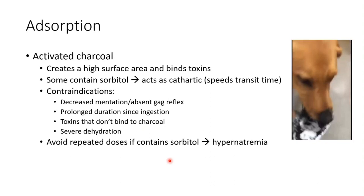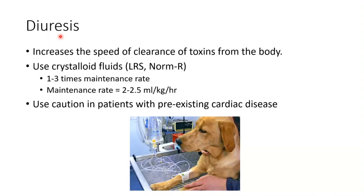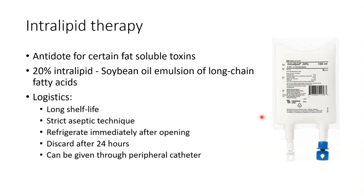Diuresis via IV fluid therapy helps flush out many toxins. I give anywhere from one to three times maintenance rate, with maintenance being defined as 2 to 2.5 mls/kg/hour. Rate depends on patient age — push harder in younger patients, less in older ones — and whether they have pre-existing cardiac disease. For patients where pushing hard is difficult, place a urinary catheter, measure fluid in and fluid out, so you know if you're pushing them too hard.